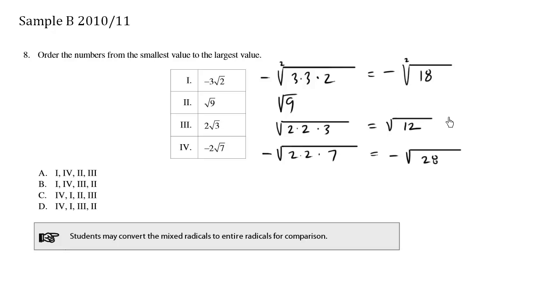And so now we can order these a lot better. Negative root 28 looks like the smallest on the number line. Then we have negative root 18. And then we have root 9. And then we have root 12. This is the order.